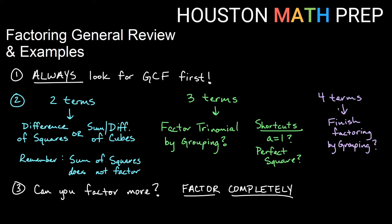If it's four terms, it may be that it's already grouped for you, because with grouping we take three terms and break the middle term into two separate pieces, giving you four terms. So if you already have four terms, you may simply finish the factoring by grouping. No matter what you do, remember: always factor completely and see if you can go further than you already have.